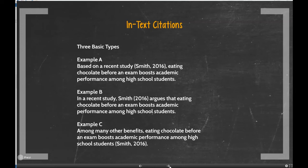Example B does something similar, but the author's name is actually used in the sentence itself. So it reads: 'In a study, Smith (2016) argues that eating...' and so on. This is often used by writers when they want to emphasize a particular author by name — someone who's famous in the field, someone controversial, or perhaps someone from outside the field who has something meaningful to say. It's an emphasis strategy: if you really want to highlight the author, you can pull him or her into the actual sentence.